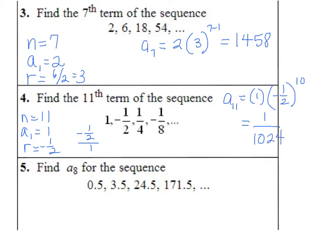For the last one, you need to do the work to find r because otherwise you'll get it wrong — don't assume it's times 3. n equals 8, a sub 1 is one-half. To find r, take 3.5, which is 7/2, divided by 1/2. Flip and multiply: r equals 7, not 3. The decimal makes it look different, so be careful.